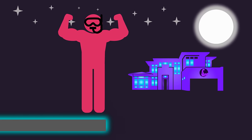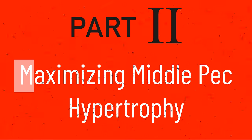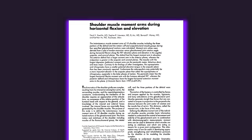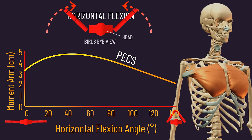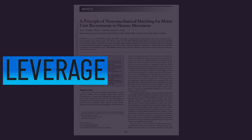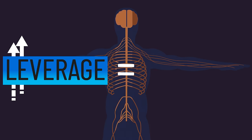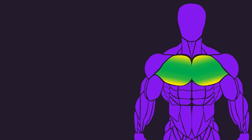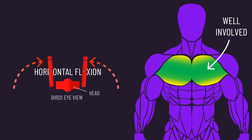Starting with the middle pecs: as shown in a classic 1997 paper, the middle pecs have tremendous leverage for shoulder horizontal flexion, with the front delt behind. Leverage specifically refers to the muscle's moment arm — the perpendicular distance between the line of force of the muscle and the center of the joint it moves. Promising data suggests leverage is perhaps the most important factor behind how the central nervous system chooses which muscles to activate in an exercise. Well-controlled electromyographic research finds a significant chunk of the pecs, including the middle region, is active in shoulder horizontal flexion.